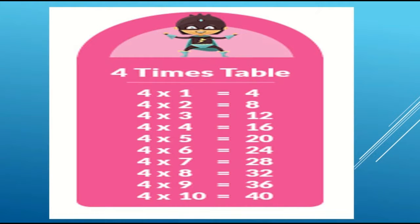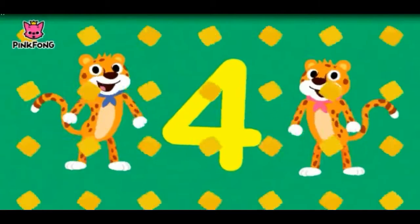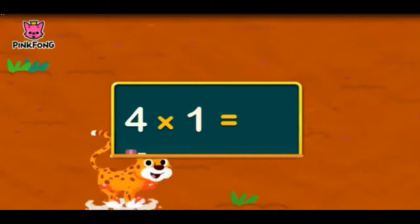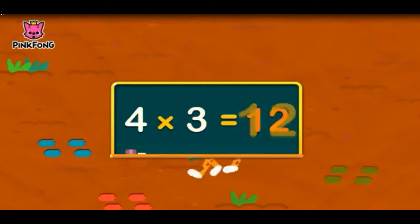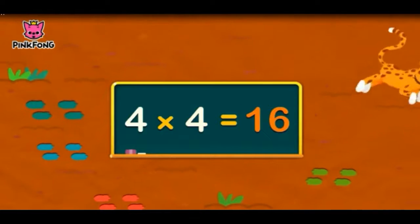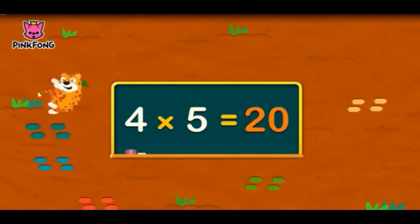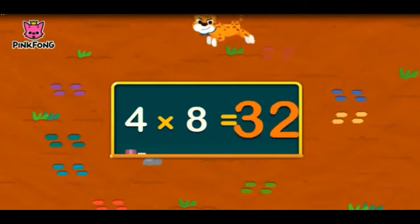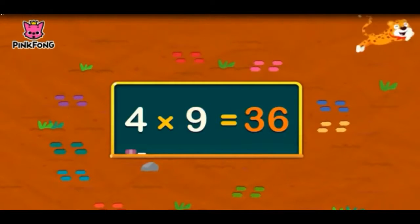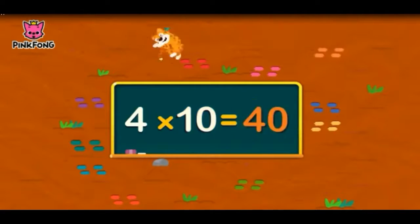Now we will revise this times table. Learn this timetable with me all of you. 4 ones are 4. 4 twos are 8. 4 threes are 12. 4 fours are 16. 4 fives are 20. 4 sixes are 24. 4 sevens are 28. 4 eights are 32. 4 nines are 36. 4 tens are 40.